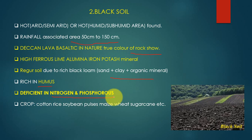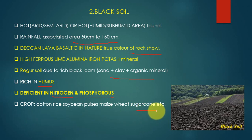Crops grown in black soil include cotton, rice, soybean, pulses, maize, wheat, sugarcane, etc. This is a good soil type in which a wide variety of crops can be grown.